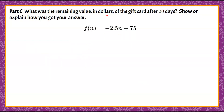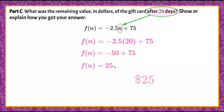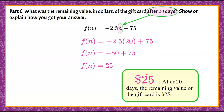Here's part C. What was the remaining value in dollars of the gift card after 20 days? We're looking at our function written in slope-intercept form and asked to find the value of this gift card after 20 days of use. We know that the number of days is n, so we're going to replace n with the value 20. Evaluating: negative 2.5 times 20 plus 75. Negative 2.5 times 20 is negative 50, and then we add 75, giving us 25. So after 20 days, there's $25 remaining on the gift card.